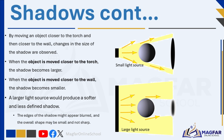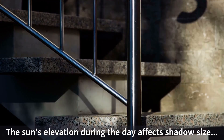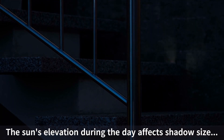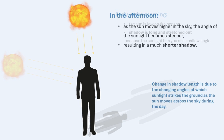The position of the light source relative to the object also affects the size of the shadow formed. When standing outside in the same place at different times of the day, the length of your shadow changes due to the position of the sun. Early in the morning, the sun is low on the horizon, causing your shadow to be long and stretched out. In the afternoon, as the sun moves higher in the sky, the angle of sunlight becomes steeper, resulting in a much shorter shadow.